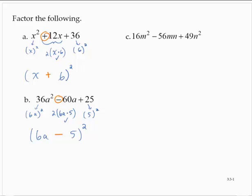16m squared minus 56mn plus 49n squared. Again, I notice that 16m squared is the square of 4m. 49n squared is the square of 7n.